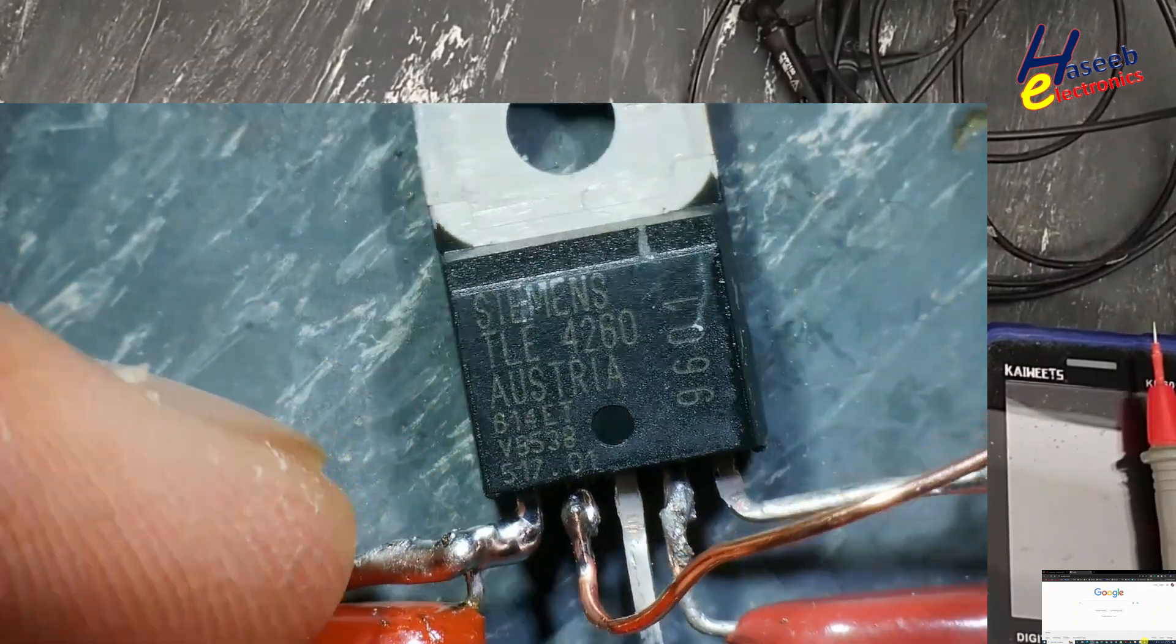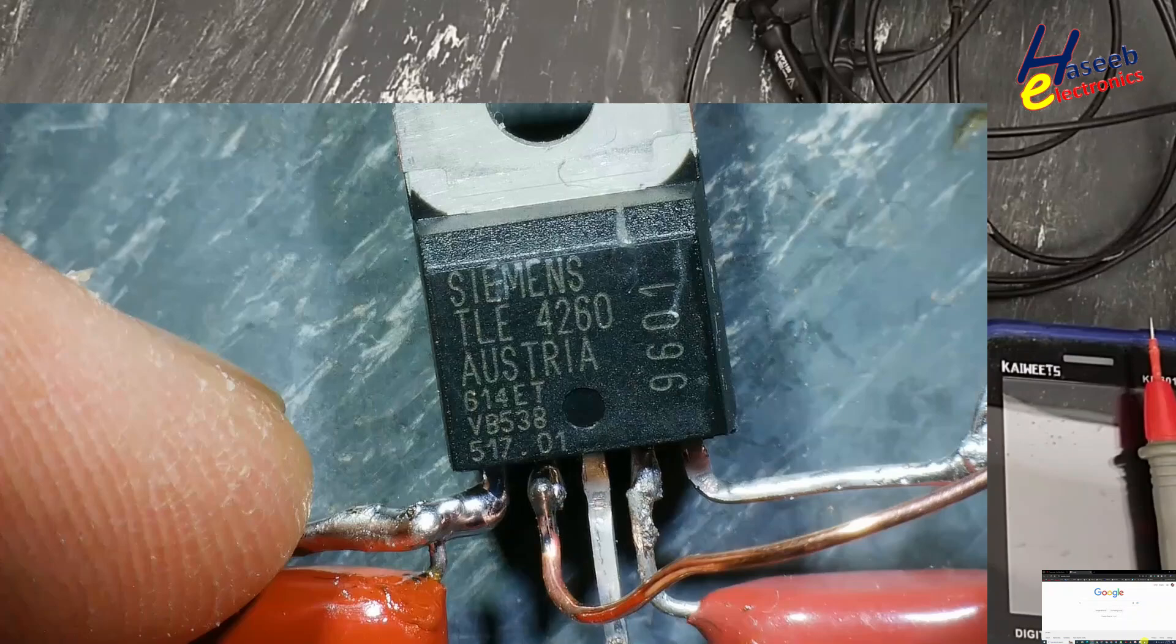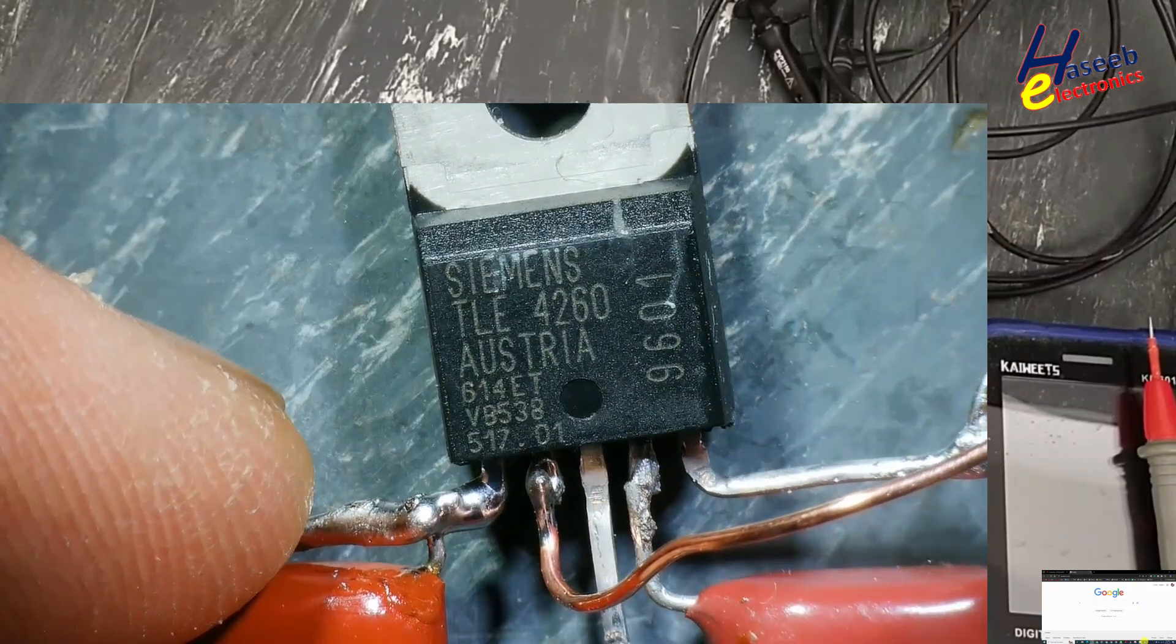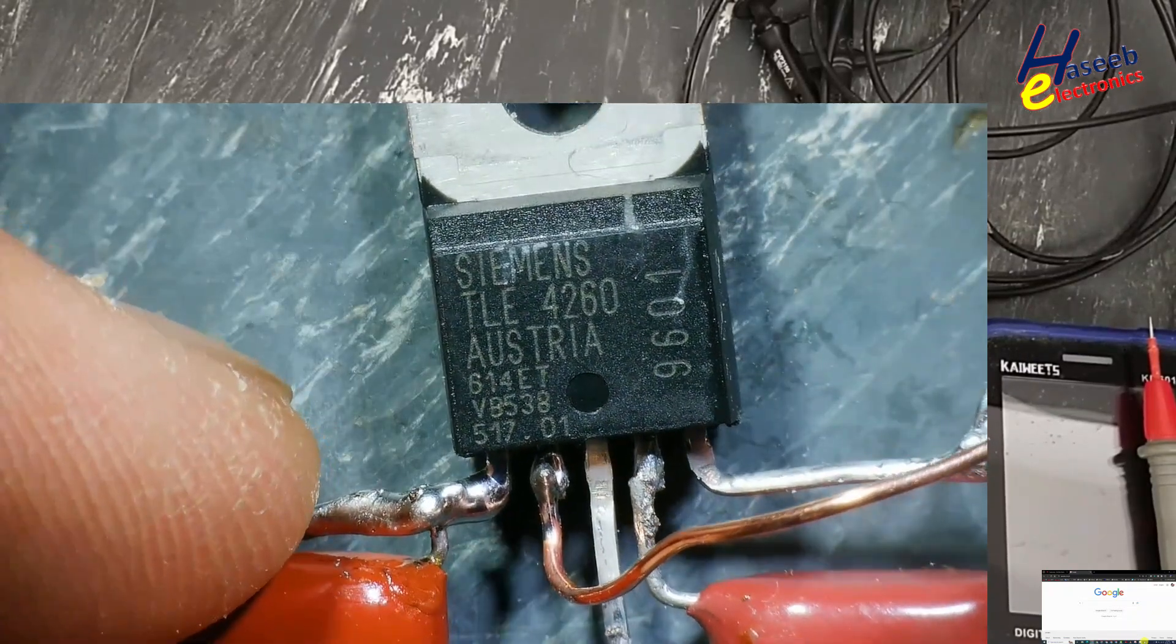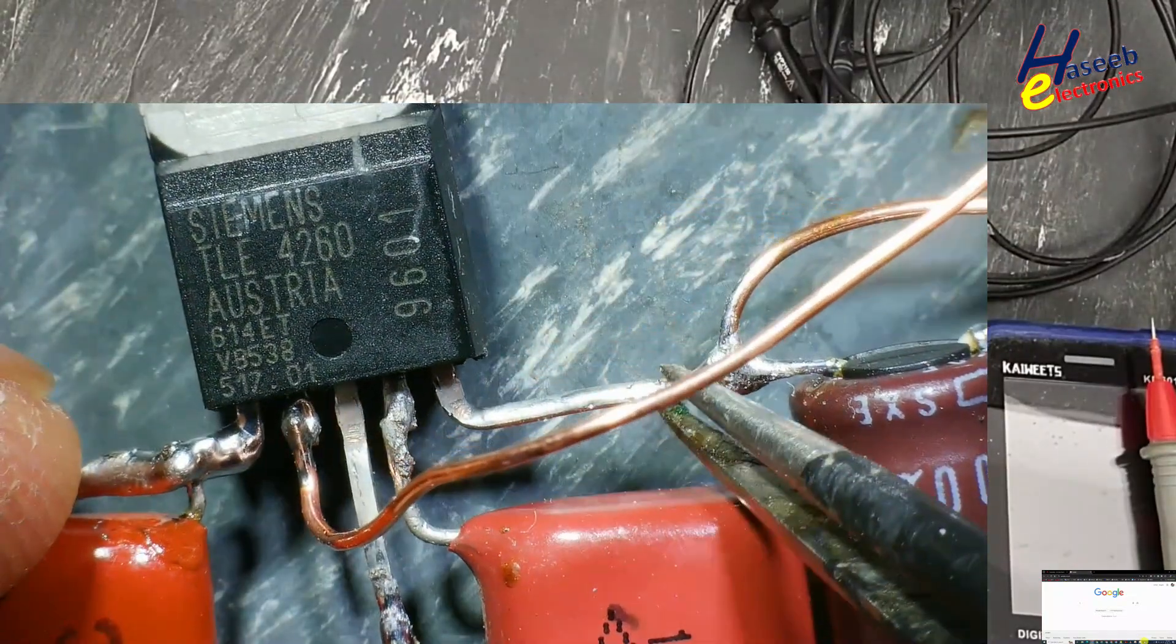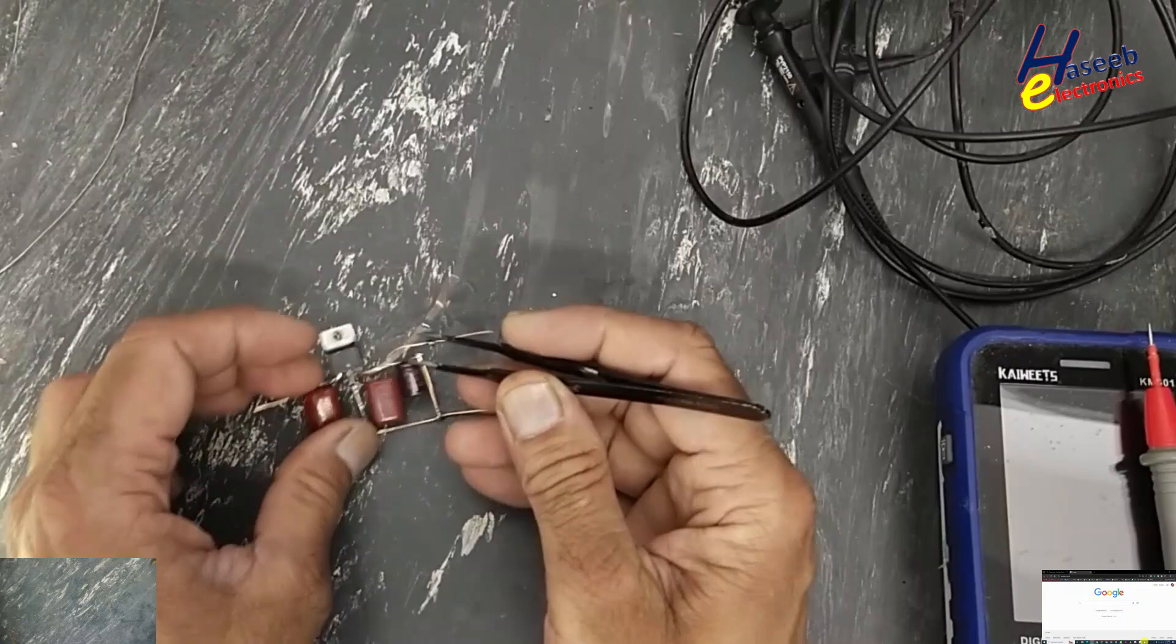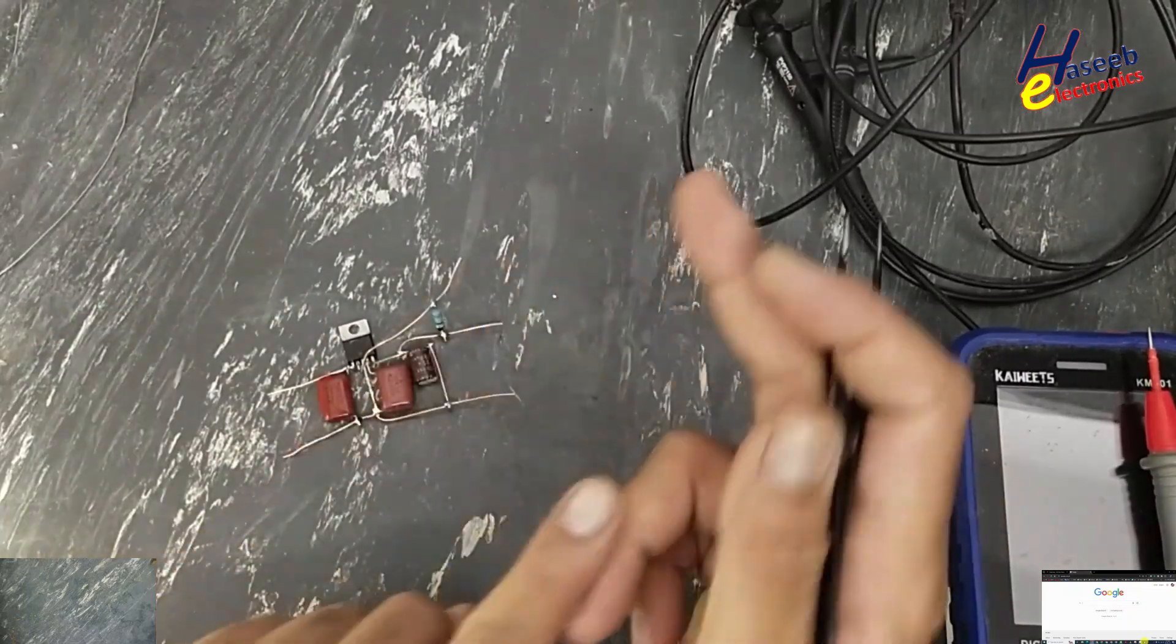Assalamu alaikum warahmatullahi wabarakatuhu. Friends, welcome back to my channel. This 5-pin component TLE4260 is a 5-volt regulator with reset pin. It provides regulated 5 volts for a processor and provides a delayed reset signal to reset the processor in case of power failure, line voltage drop, or other faults.